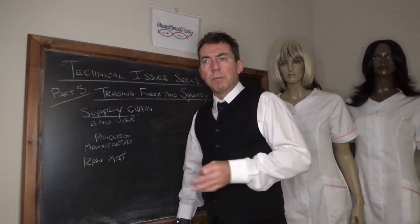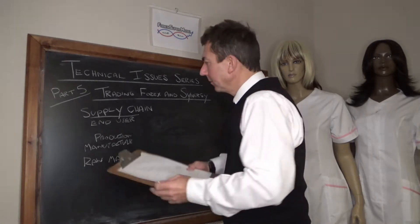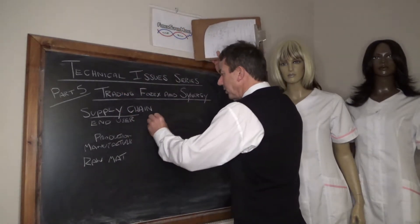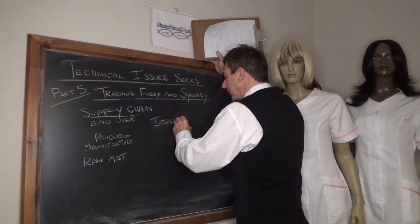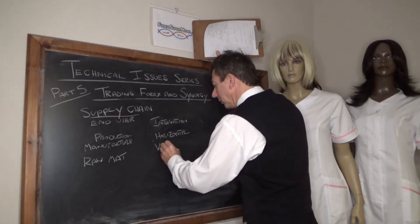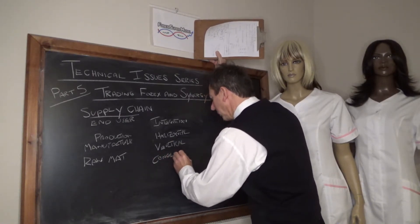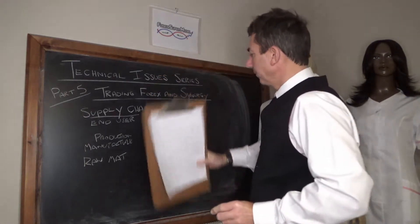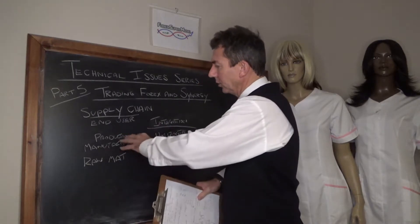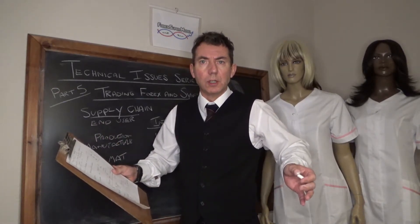They tend to link Synergy to the supply chain and integration — how do these constituent parts join together? In business they talk about integration: is it horizontal, vertical, or a conglomerate? Horizontal integration would be two similar organisations in the supply chain merging together — say, two supermarkets or two production firms.